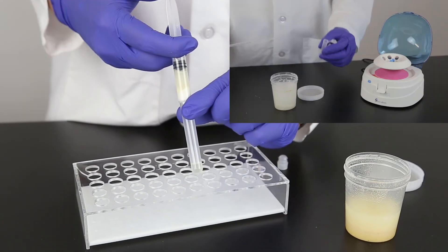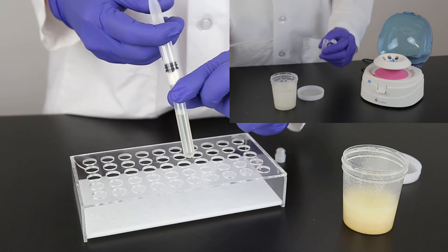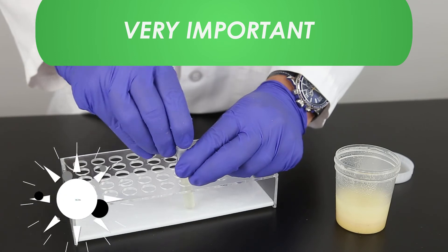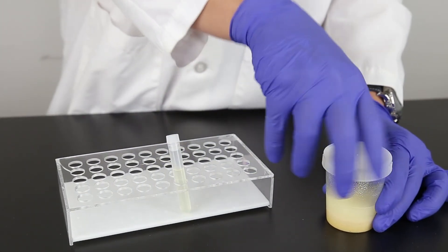You can also pipet the sample into a 2 milliliter microcentrifuge tube and centrifuge for 30 seconds. It is important to collect at least 3 milliliters of filtrate through a single filter syringe for optimal sample accuracy.